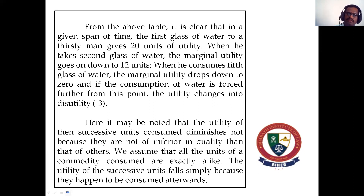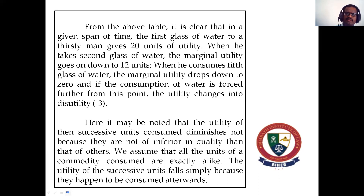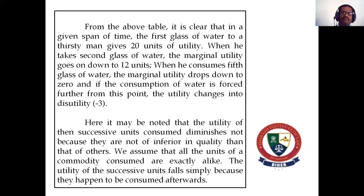The utility of successive units consumed diminishes — not because they are of inferior quality compared to others, since we assume that all units of the commodity consumed are exactly alike. The utility of successive units falls simply because they happen to be consumed afterwards. The person wants to take continuous units of water with no time lag, so the psychological aspect of human beings operates. In the initial stages, the first unit gives more level of satisfaction and utility when compared to the second and third units. At a certain point there is zero utility, and after that, negative utility.